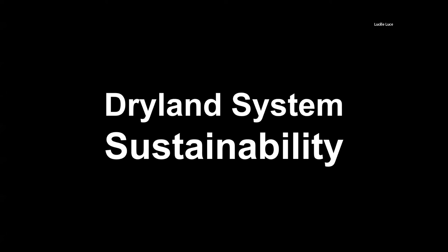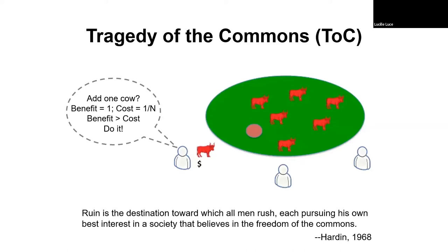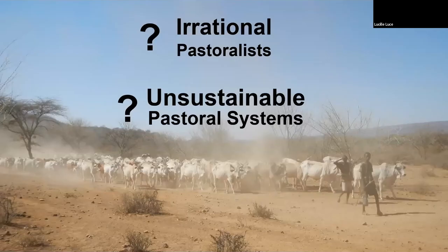First topic: dryland system sustainability. My interest started from learning about the tragedy of the commons. According to Hardin, ruin is the destination towards which all men rush, each pursuing his own best interest in a society that believes in the freedom of the commons. The pastoral system is a classic example — every herder using the same patch of pasture has an interest to add more cows because the benefit always exceeds the individual cost, which is shared by everyone.